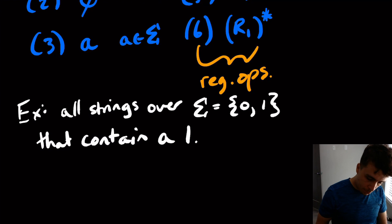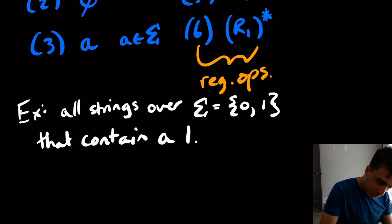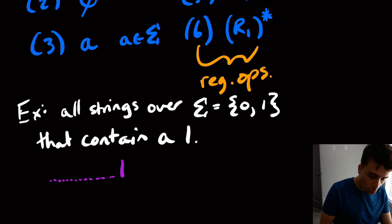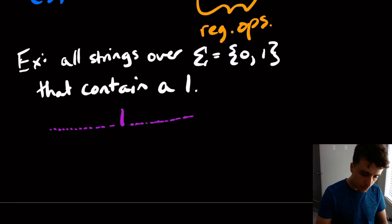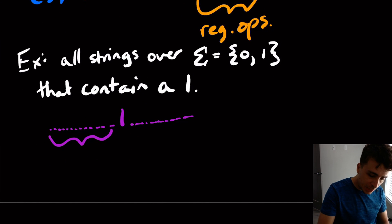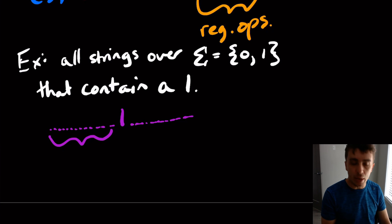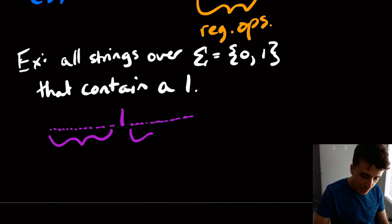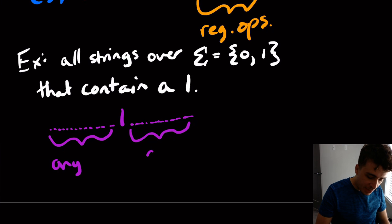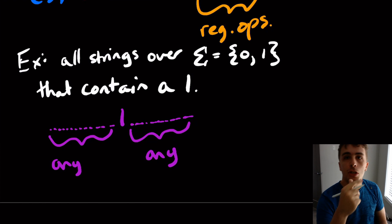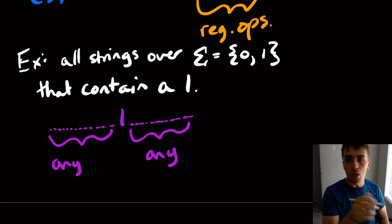So how can we actually write this? Let's think about it differently. If we're generating a string and it contains a 1, we need to ask: whenever we have these 'contain' types of questions, what could appear on either side of the 1? Because as long as it contains a 1, we don't really care what else happens. So on the left and right side of the 1, we could have anything. And 'anything' means (0 union 1) star.